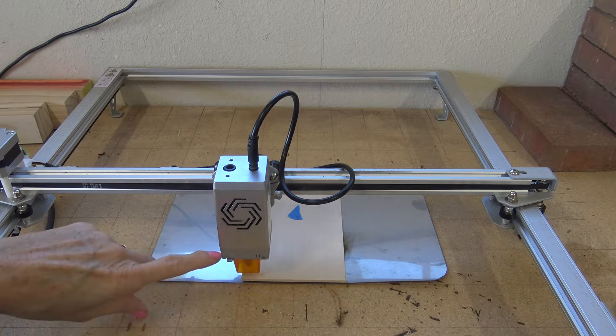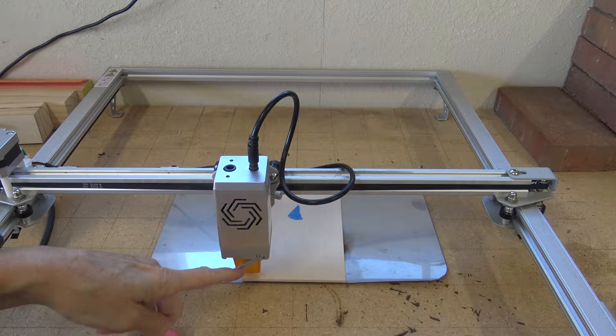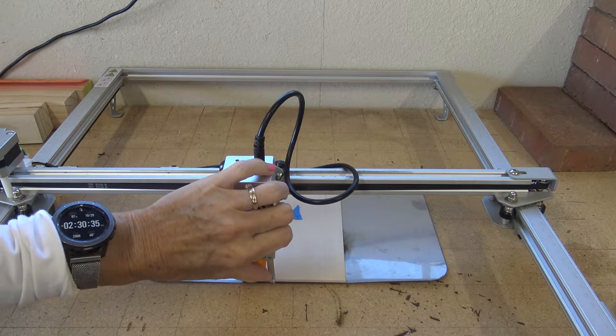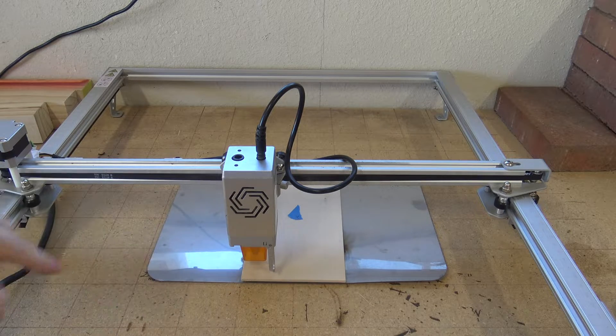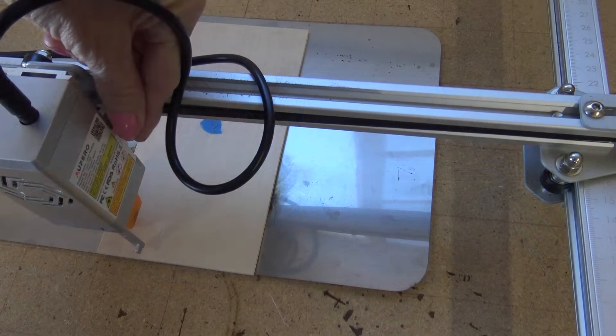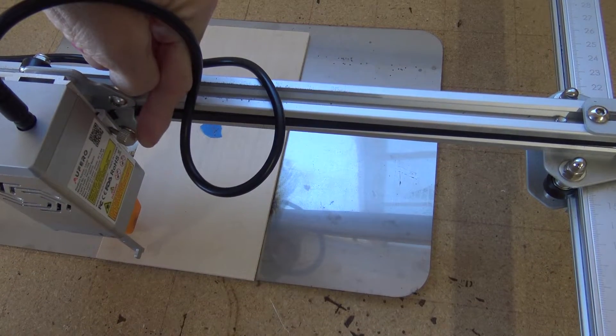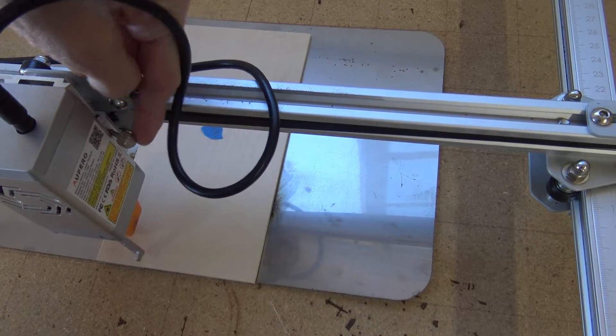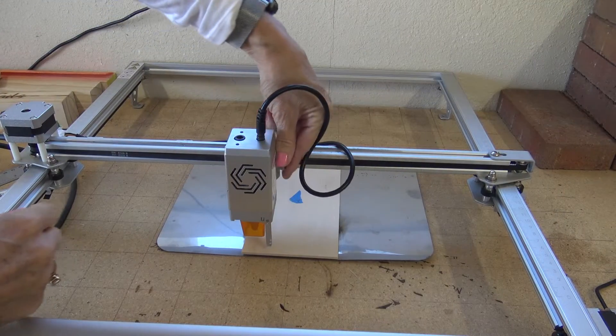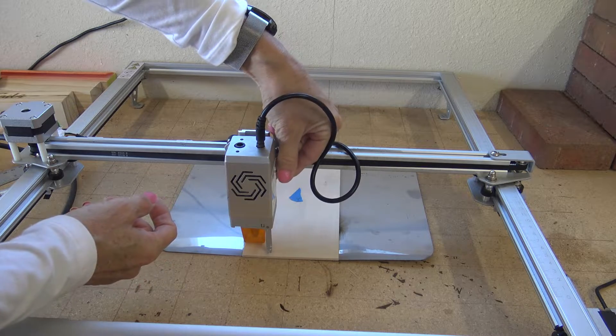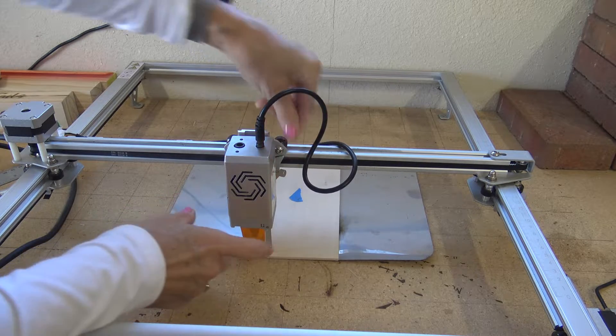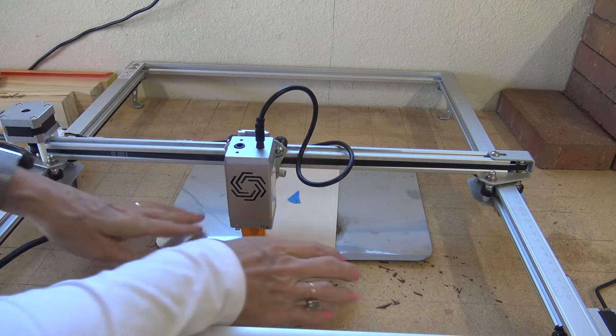So at this point, you have on the Ofero machine, you have a kickstand here. And that is how you can adjust the height of your laser from your wood. And there's a little set screw right here. And that's how you raise and lower your laser. So I'm going to lower that until the kickstand hits the bottom, tighten up my set screw, and bring up my kickstand.